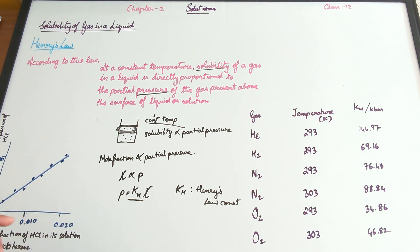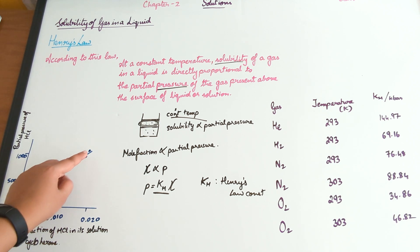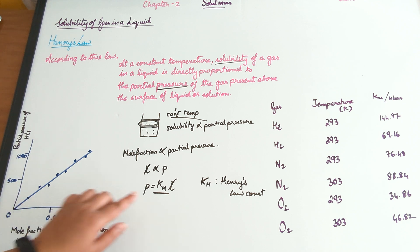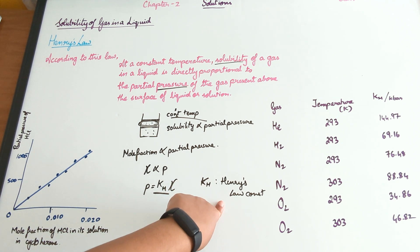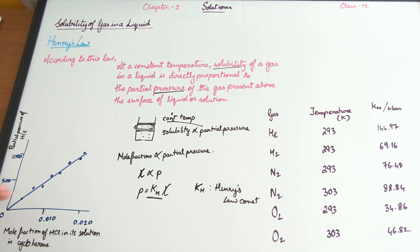When we plot a graph between the partial pressure of HCl and the mole fraction of HCl in its solution in cyclohexane, we get a straight line passing through the origin. The slope of this particular line is equal to Henry's law constant, KH.